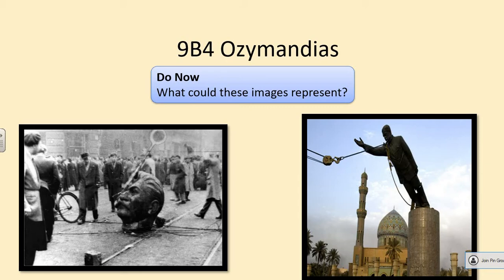So we have two images: on the left, what looks like a sculpture of somebody's head lying on the floor — possibly broken — with people around it, in a black and white photograph. The one on the right looks like a crane with a noose around a leader's neck, pulling them down off a pedestal. These images may represent that these people were once mighty leaders or people of importance, hence having a statue of themselves, and the fact they're now being pulled down or lying broken represents that they no longer have that position of power or control over the people.